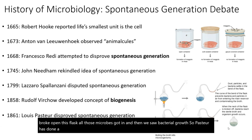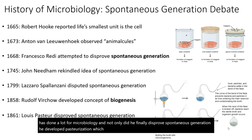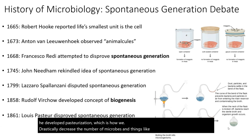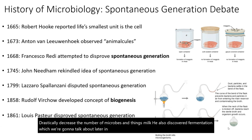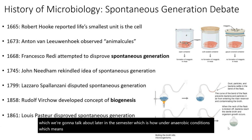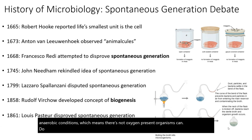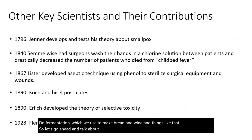Pasteur did a lot for microbiology. Not only did he finally disprove spontaneous generation, he developed pasteurization, which drastically decreases the number of microbes in things like milk. He also discovered fermentation — under anaerobic conditions, meaning no oxygen present, organisms can do fermentation, which we use to make bread and wine and things like that.